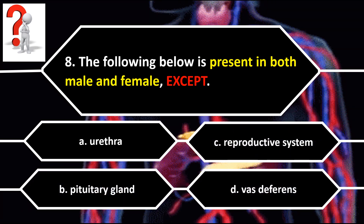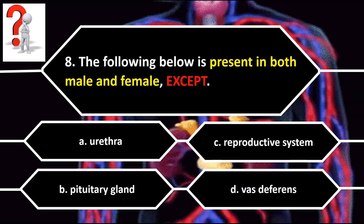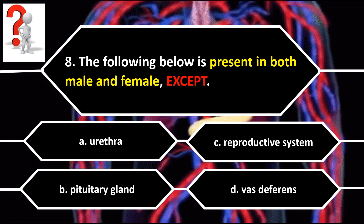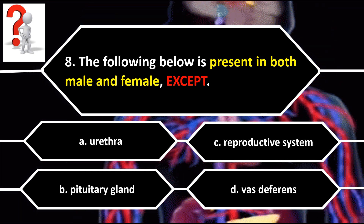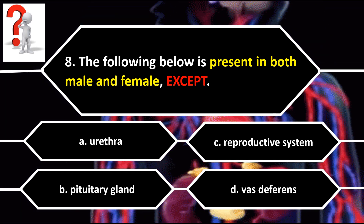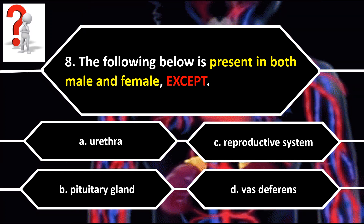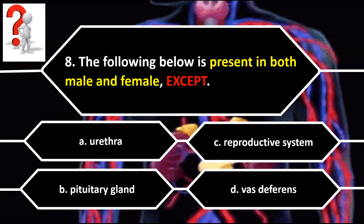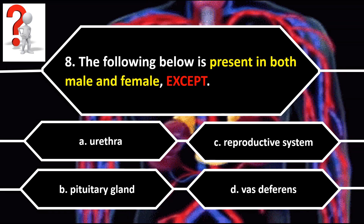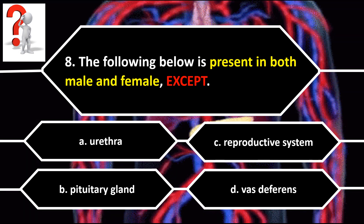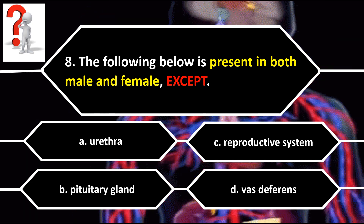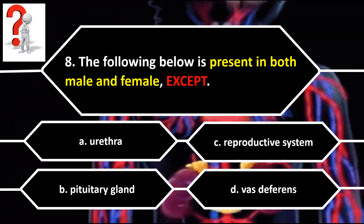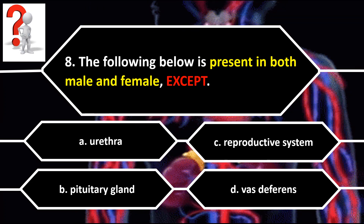Number 8. The following below is present in both male and female, except. A. Urethra. B. Pituitary gland. C. Reproductive system. D. Vas deferens.